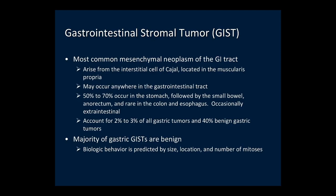Gastrointestinal stromal tumors (GIST) are the most common mesenchymal neoplasm of the GI tract and can be benign or malignant. They arise from the interstitial cell of Cajal located in the muscularis propria. They occur anywhere in the GI tract but are most common in the stomach, which represents 50 to 70% of all GIST. The small bowel is the second most common site, followed by the anorectum. The size, location, and number of mitoses per high-powered field are the best predictors of malignancy.